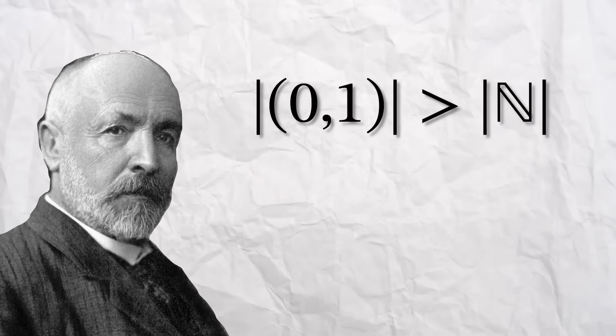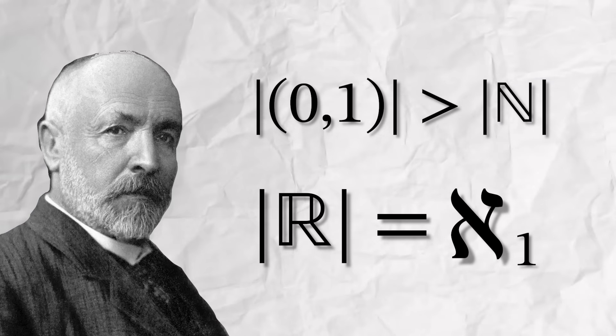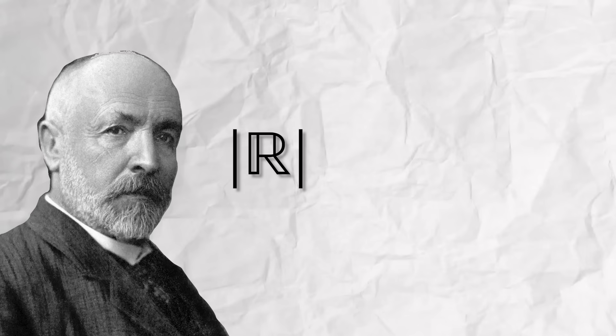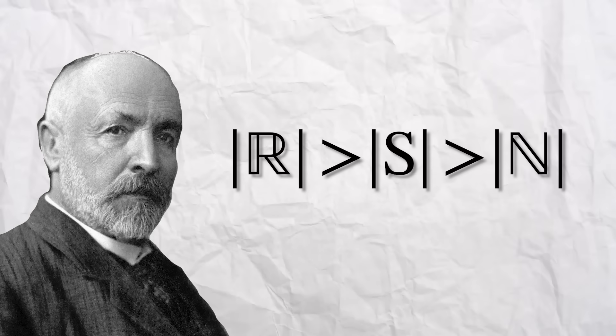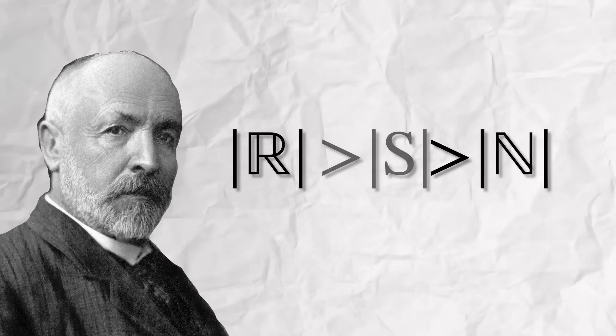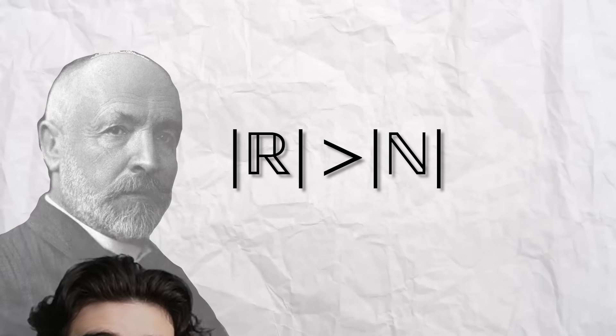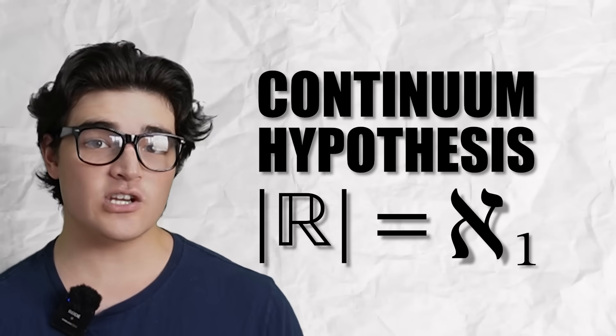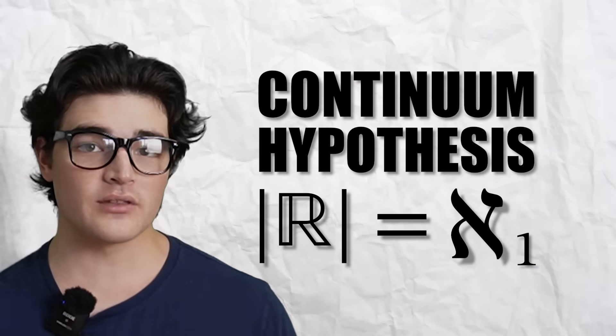You see, when Cantor proved this statement, he also proposed that the cardinality of the real numbers is Aleph 1. That would mean that the cardinality of the real numbers is strictly larger than the cardinality of the natural numbers, and there were no cardinalities in between. This would come to be known as the continuum hypothesis as it relates to the real numbers, or the continuum. But there's only one problem.